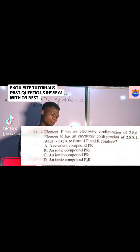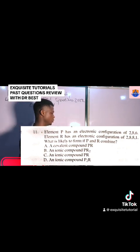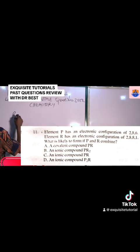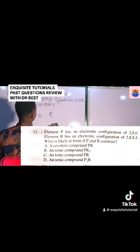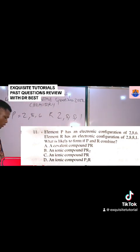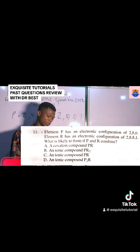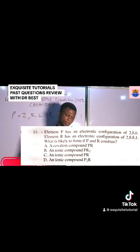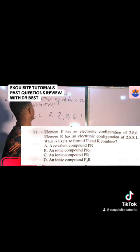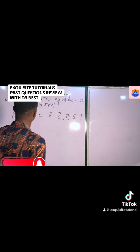This question says: Element P has an electronic configuration of 2, 8, 6. Element R has an electronic configuration of 2, 8, 8. What is likely to form if P and R combine? Option A: a covalent compound PR. Option B: an ionic compound PR2. Option C: an ionic compound PR. Option D: an ionic compound P2R.